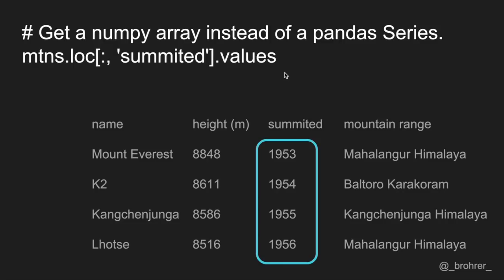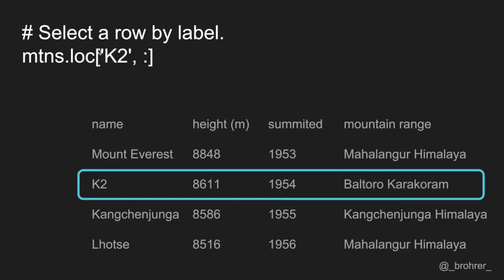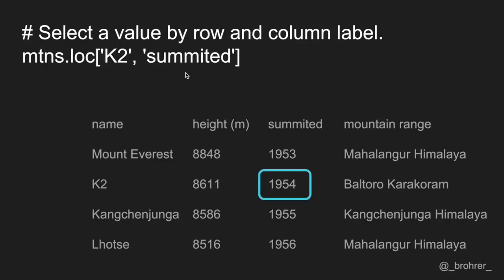If instead of a Series we just wanted an array of the numbers in the summited column, we can add .values to the end of this command — that returns a NumPy array containing 1953, 1954, 1955, and 1956. If we'd only like to get a single row, we can use .loc again, this time specifying a row label and putting a colon in the column position. If we only want a single value — for instance, the year that K2 was summited — we specify the labels for both the row and the column. The row always comes first. While you can get away with only one argument in .loc, it's most straightforward to always specify both the row and column, even if it's with a colon.